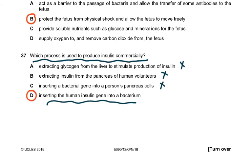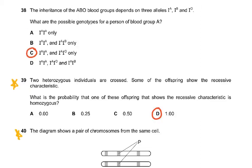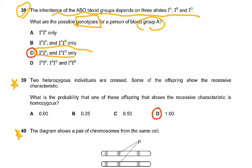Question 38: the inheritance of ABO blood groups depends on three alleles — I^A, I^B, and I^O. What are the possible genotypes of a person with blood group A? The only possible answers are I^A I^A and I^A I^O — no other answer was correct.